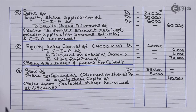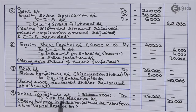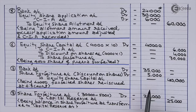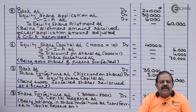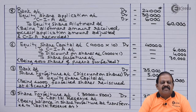Balance in Share Forfeiture Account: ₹30,000 (profit at forfeiture) minus ₹5,000 (discount on reissue) = ₹25,000 transferred to Capital Reserve. Entry 8: Share Forfeiture Account Dr ₹25,000 to Capital Reserve Account ₹25,000. As per Companies Act, any balance remaining in Share Forfeiture Account after reissue must be transferred to Capital Reserve. In this question we learned that when shares issued at discount are forfeited, the discount must be reversed.